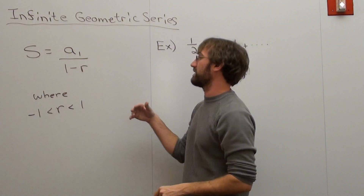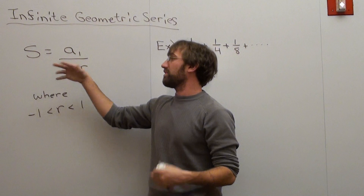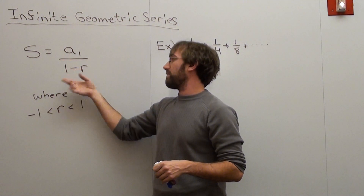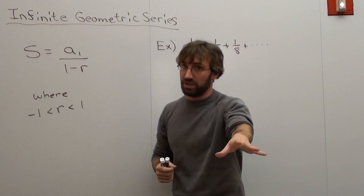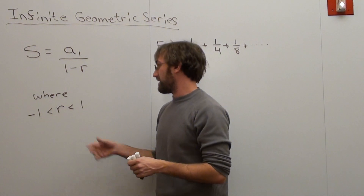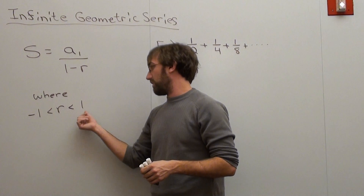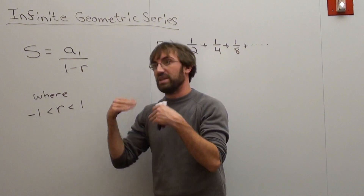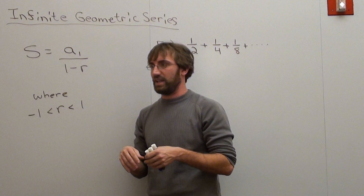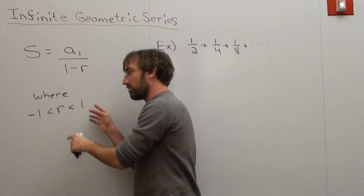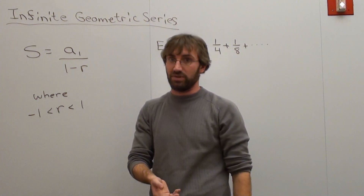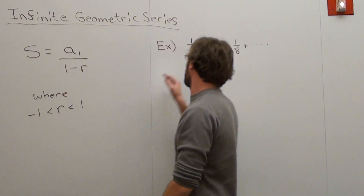Basically, what the formula reads is that the sum of a series is equal to the first term divided by 1 minus r, but there's a stipulation. The common ratio has to be within the bounds of negative 1 and 1 — it can't equal 1 or negative 1. It actually has to be strictly less than 1 in absolute value.